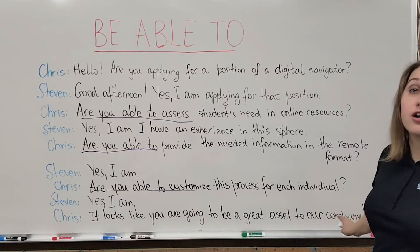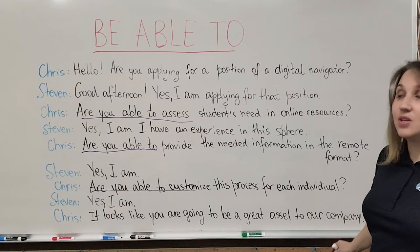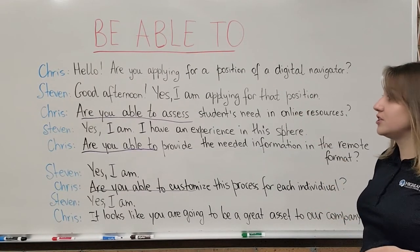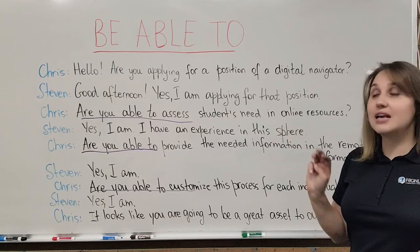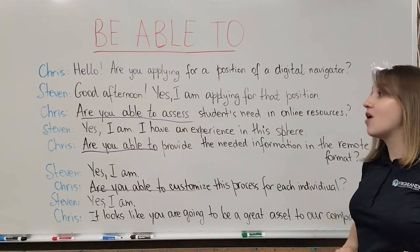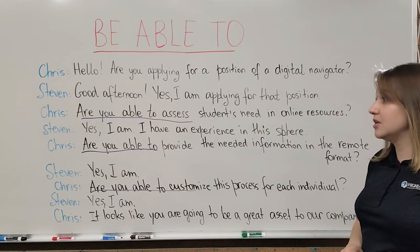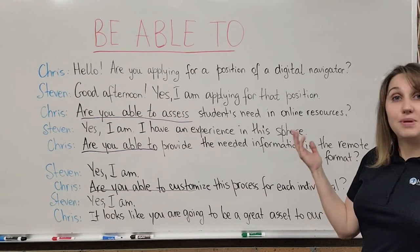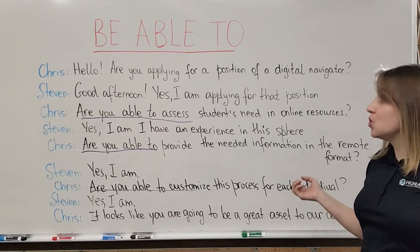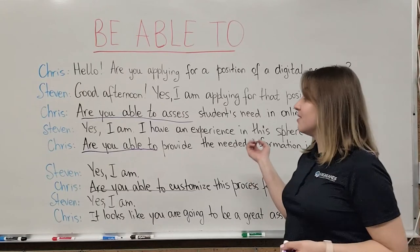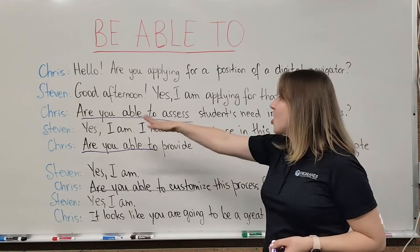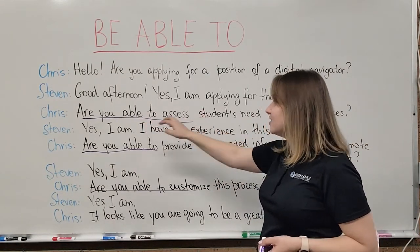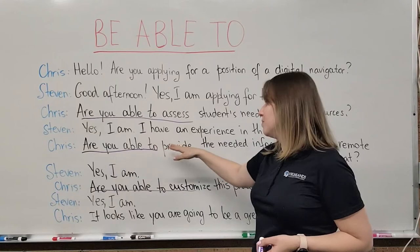So in this short conversation, we have three examples of how we are using the form 'be able to' in the form of a question: 'Are you able to assess?', 'Are you able to provide?', and 'Are you able to customize?' So that's the end of our lesson.